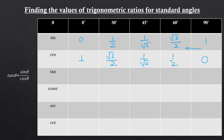For tangent, dividing sine by cosine: 0/1 = 0; (1/2)/(√3/2) = 1/√3; (1/√2)/(1/√2) = 1; (√3/2)/(1/2) = √3; and 1/0 is undefined.